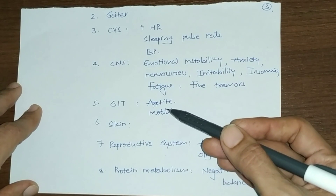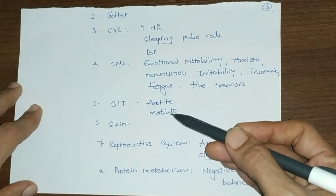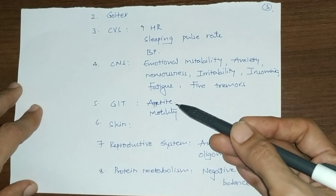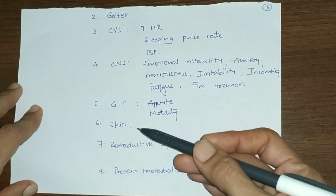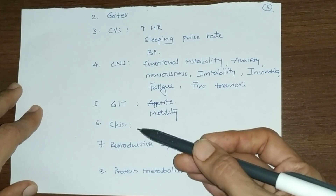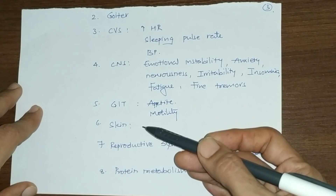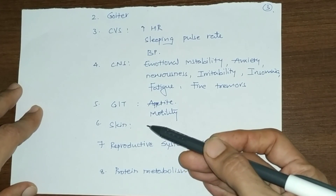Digestive system symptoms include increased appetite and increased digestive system motility. Despite increased appetite and motility, there is weight loss. There is also loss of hair, vasodilation, and warm, moist, soft, and red skin.